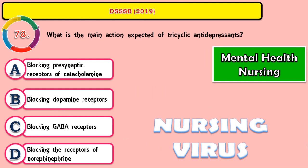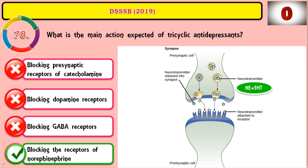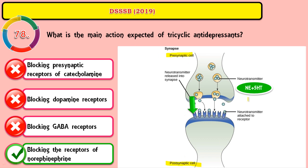Question 78: What is the main action expected of tricyclic antidepressants? The correct answer is blocking the reuptake receptors of norepinephrine. On the picture you can see the normal mechanism of norepinephrine and serotonin passing from the presynaptic area to the postsynaptic area — that is the normal function.